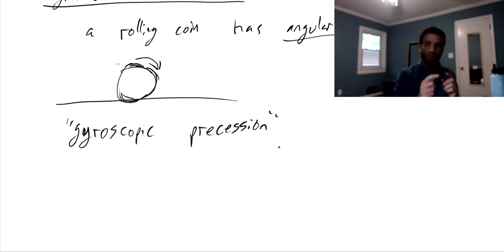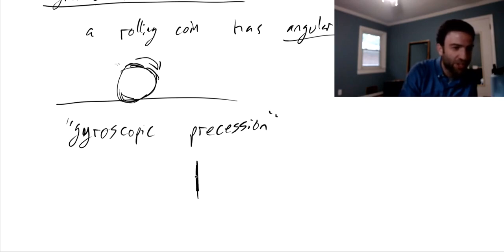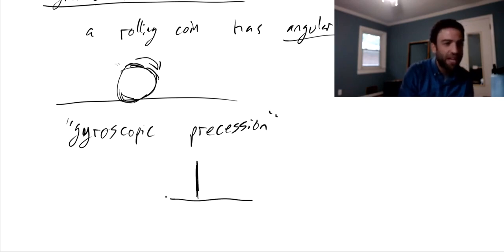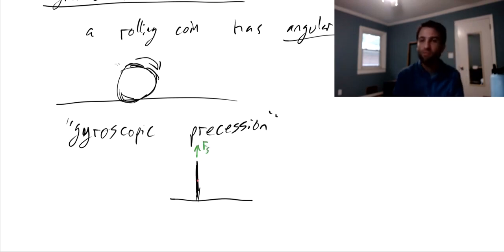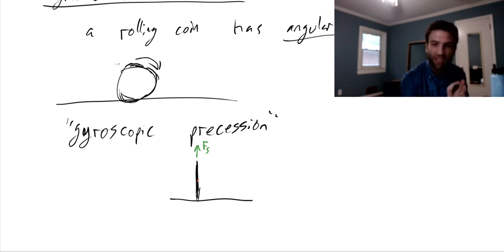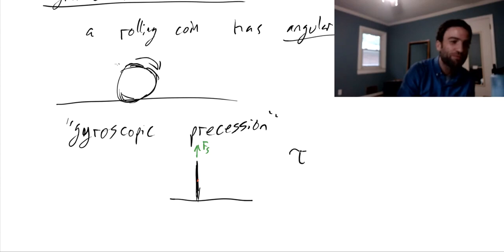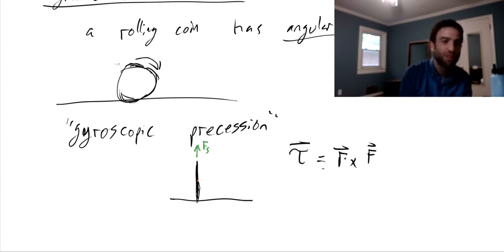Gyroscopic precession happens whenever an object experiences a torque which is perpendicular to its angular momentum. When you have a coin that's perfectly upright - drawing the coin edge-on so it's rotating into the page - as the coin rolls, the support force acts straight up. The coin's center of mass is right in the middle. So the support force is pointing directly towards the center of mass. A torque is the lever arm crossed with the force, and if the lever arm is pointing directly towards the force, there will be no torque.